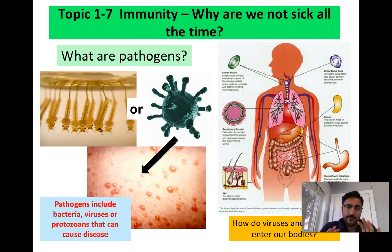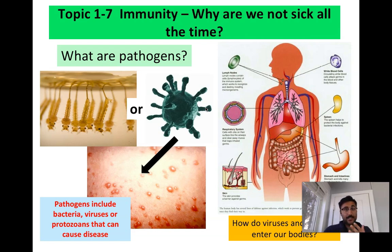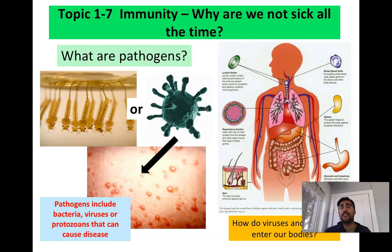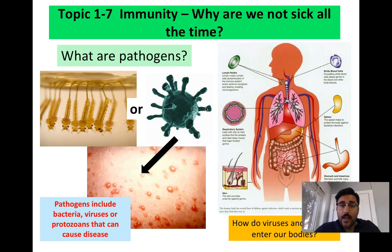Let's define some initial terms. A pathogen is anything that can get in the body that shouldn't be there. A pathogen can be bacteria, viruses, or a class of things called protozoans — anything that can cause biological disease is considered a pathogen. Bacteria are fundamentally different than viruses, and we'll discuss them separately, but in terms of general immune response, the response is typically the same initially.